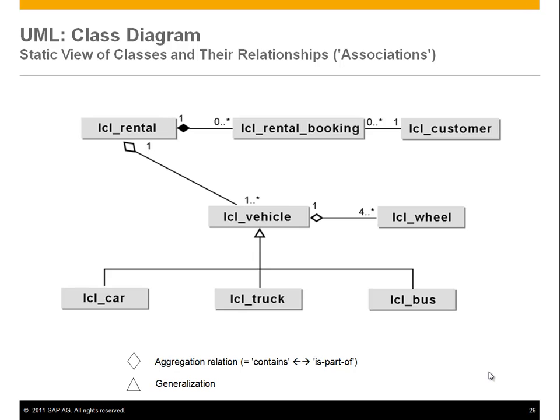Here we want to explain two important symbols: the diamond and the triangle. Looking at the vehicle and the wheel, you see there is a diamond on the vehicle side. What this means is a vehicle contains or has a few wheels. This kind of relationship denotes a part-whole relationship — the vehicle is the whole and the wheels are the parts.